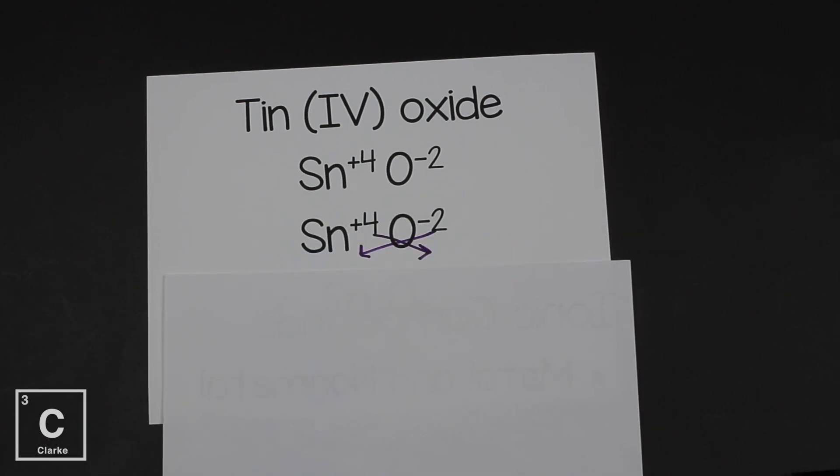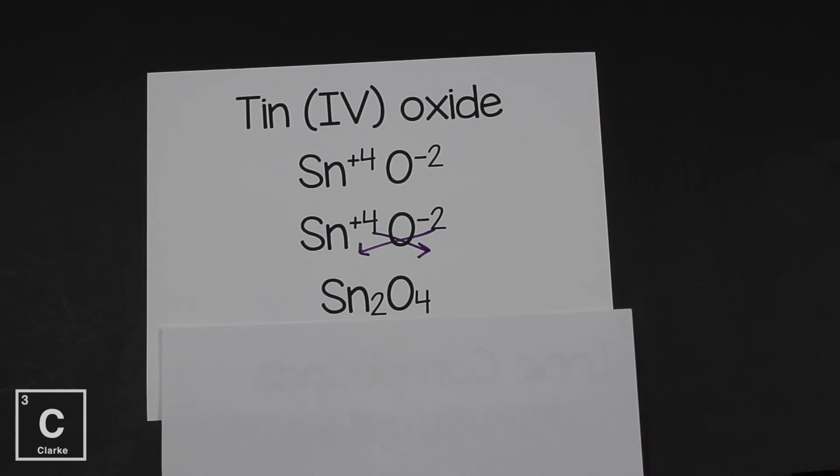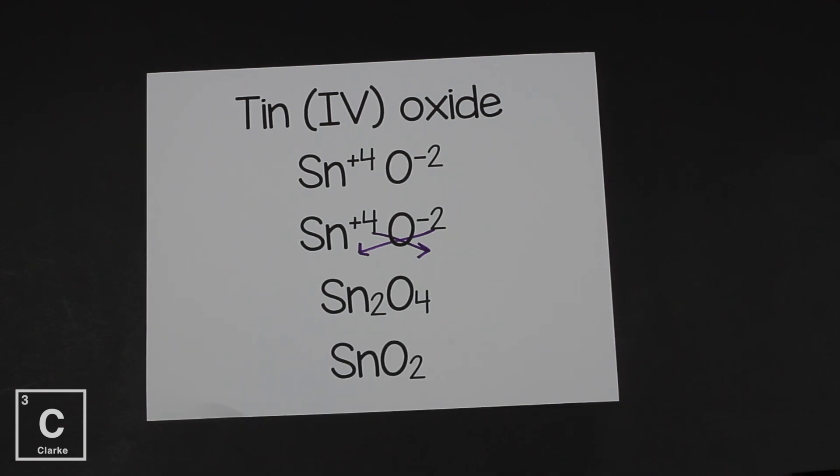So Sn is going to get a two and oxygen is going to get a four. I don't know if you were paying attention before, but I said when you crisscross down, you always have to use the lowest whole number ratio. Two and four, not the lowest whole number ratio. Both of those numbers are divisible by two. So we're going to divide out of two. Or basically, if you think back to math, we're going to reduce this down.